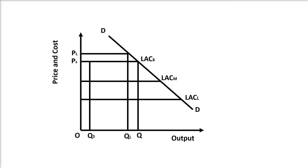The limit output OQL is equal to OQ minus OQS. This price PL is the new equilibrium price because it prevents new firms from entering the oligopoly industry. If a new firm enters the industry, the total output of the industry will increase to OQ level and bring a fall in the price just below PS. If a firm enters the market with the scale plant of the size of the smallest firm, the total output will exceed OQL, which will bring down the price to a level just below the LAC of the entrant firm — which is in fact equal to the LAC of the smallest established firm. This prevents entry because the entrant's price would fall below its LAC.